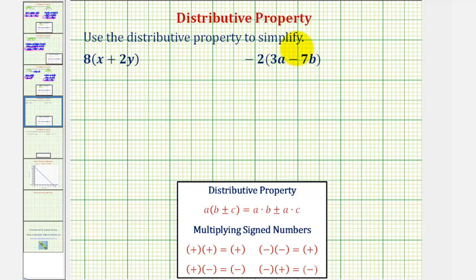We want to use the distributive property to simplify the given expressions. The distributive property is given here below where we have a times the quantity b plus or minus c equals a times b plus or minus a times c.